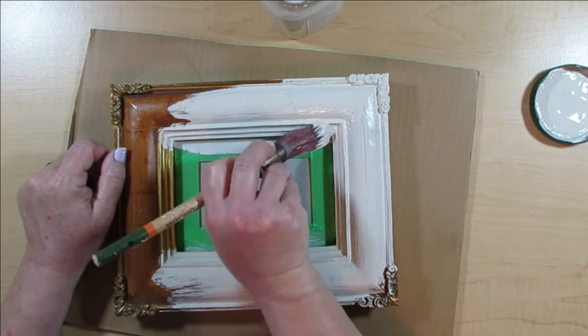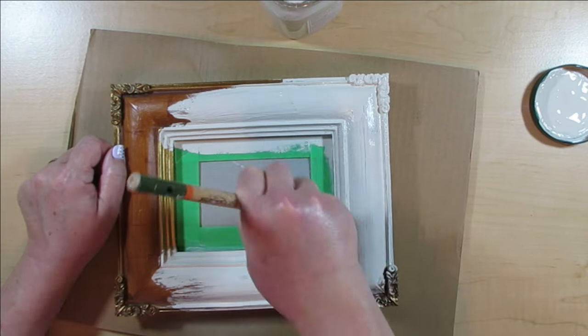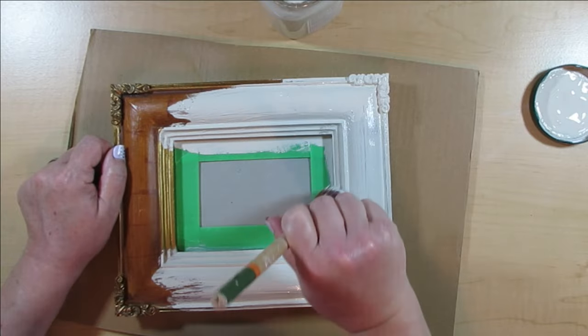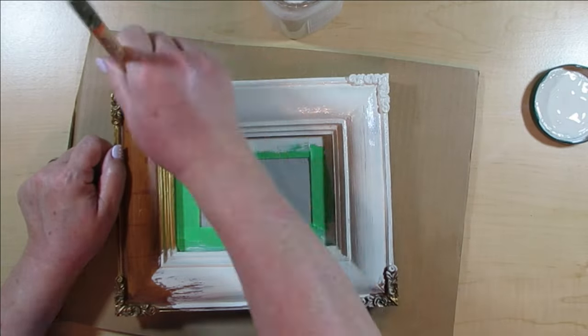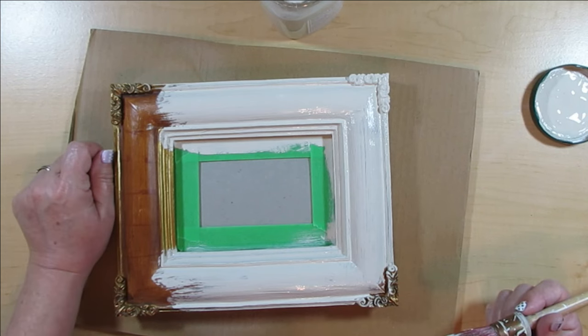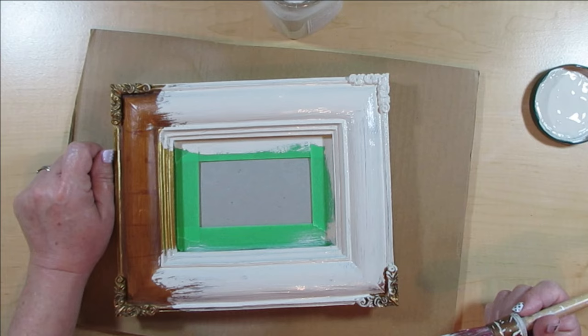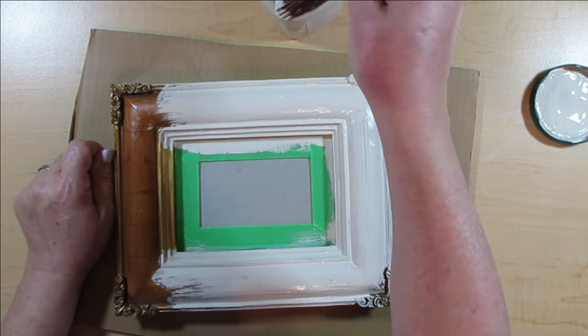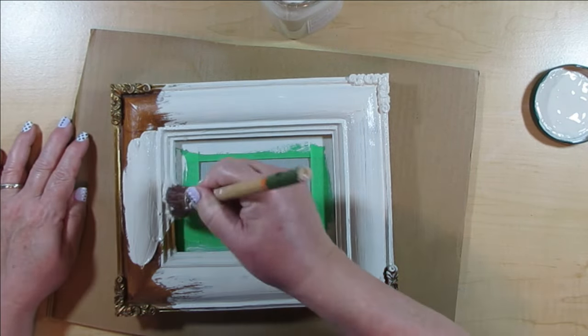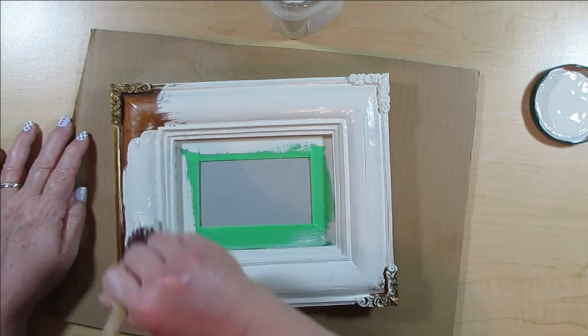I'm using the pointed sash brush from Stylemeister. I love these brushes because you can use any type of paint on them and they wash up so easily. I'm going to give this a couple of coats. I'm not going to worry about that black velvet on the back. Most of the time when the frame is standing up you won't see the back anyway.